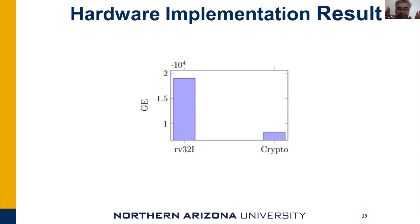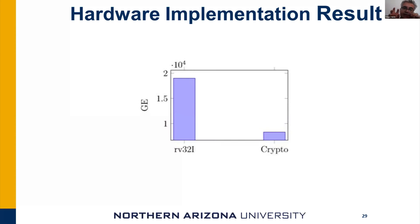Is it worth it to implement all of these? We believe so. Of these 8K additional gates, almost 6K gates are for AES- and SHA-specific instructions, and only slightly more than 2K gates are for the general bit manipulation instructions. So if you're designing for algorithms beyond AES and SHA, you need to consider how much of the instruction set is actually relevant.